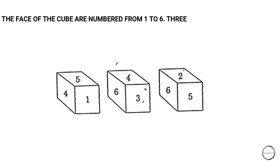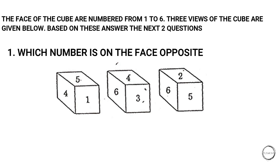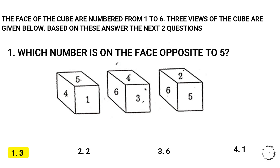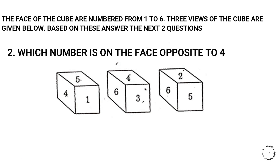The faces of the cube are numbered from one to six. Three views of the cube are given below. Based on these, answer the next two questions. First question: which number is on the face opposite to five? The options are three, two, six, one. The answer is three.